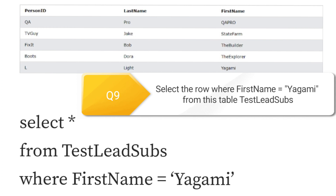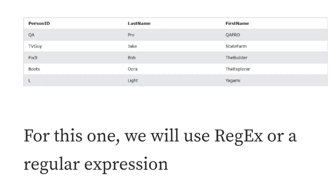Question nine: select the row where first name equals 'Yagami' from the table test_lead_subs. Now we're just returning one row, so: SELECT * FROM test_lead_subs WHERE first_name = 'Yagami'. We add a WHERE clause specifying the value we're searching for.